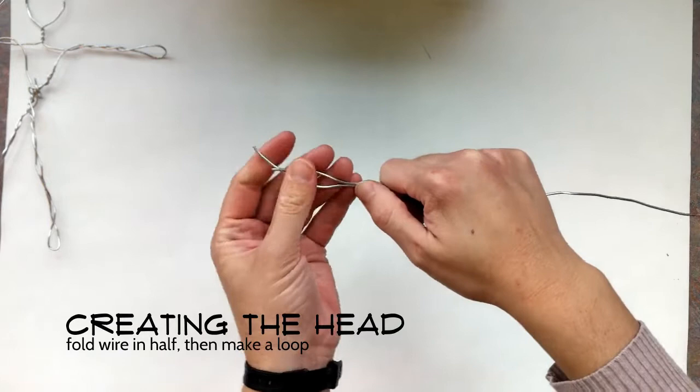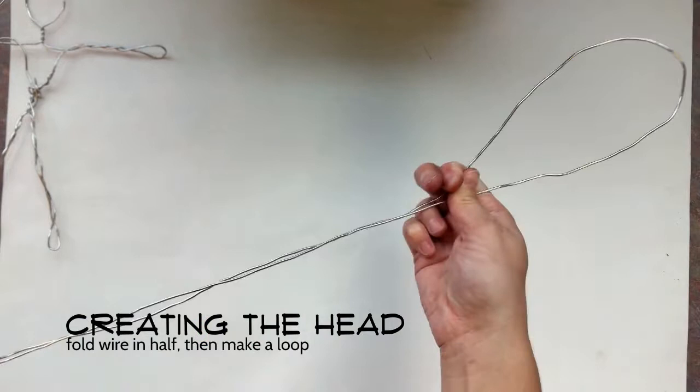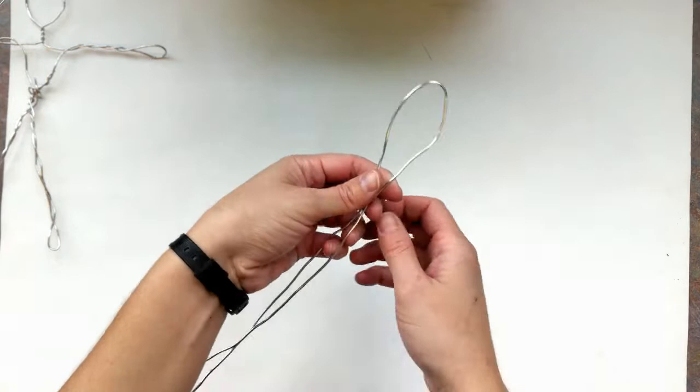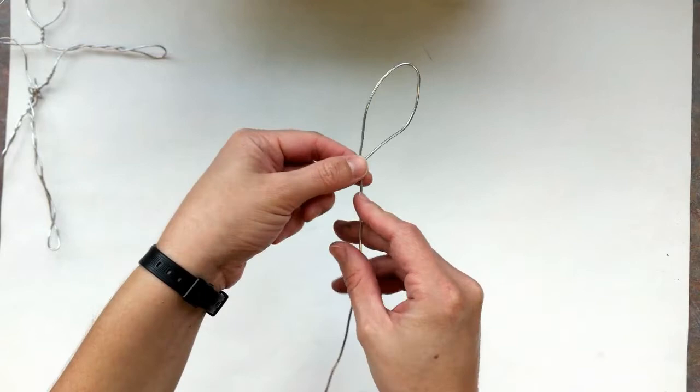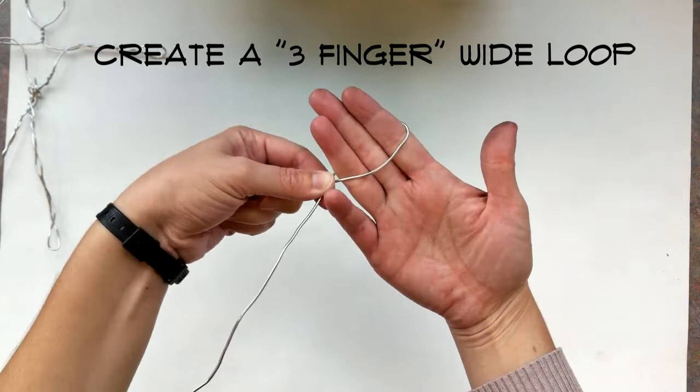Step one is to make sure your ends are together. Place them in one hand and then move with your other hand all the way up until you get a little loop right here. Once you've got a loop, you're going to cross the wires together. I could probably fit about three fingers through my loop. I cannot fit four, that's a little tight. Three comfortably, two's a little bit too small.